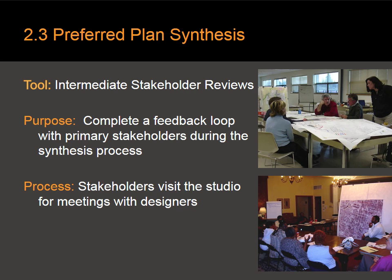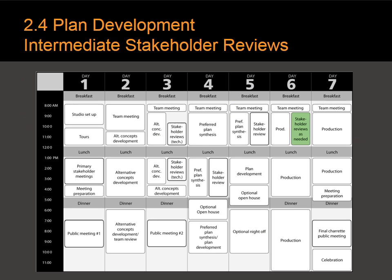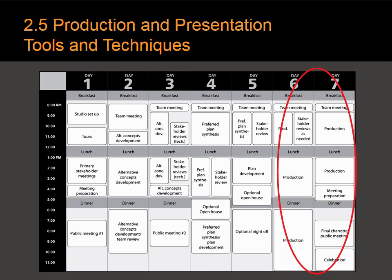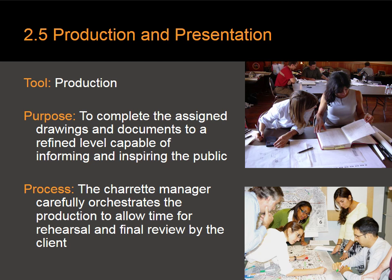More intermediate stakeholder reviews can take place as necessary. For instance, stakeholder reviews all the way on day six — maybe the mayor's chief of staff or the developer might be invited in at the very end to review the final work and make sure it's on track. Then it's on to production. Here the meetings basically go away, and the Charette team puts their heads down to create documents and drawings refined enough to inform and inspire the public. This is a production management process run by the Charette manager — it's important to orchestrate it so there is no log jam at the computers at the end, and you need to stagger out the production.